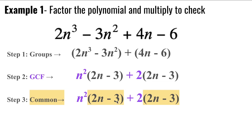Once that is the case, what you can do is essentially break this up into two new binomials in your factored form. The first binomial is basically the two greatest common factors, n squared plus 2, and the second binomial is what you have in common.